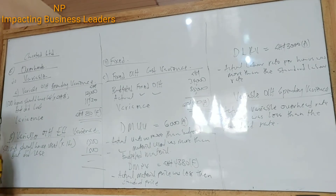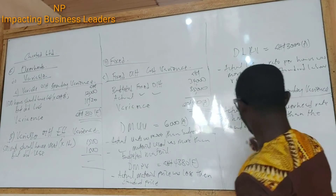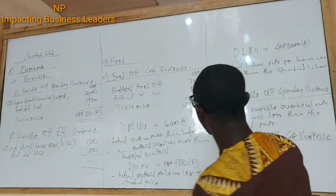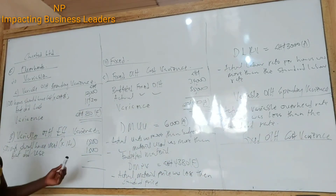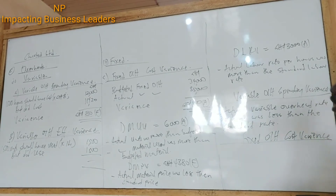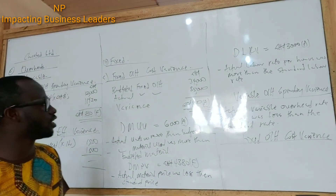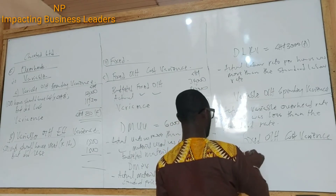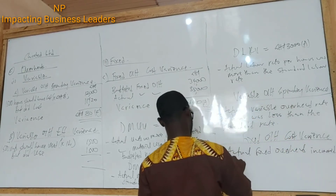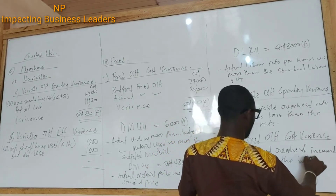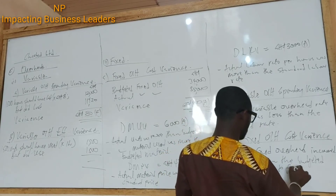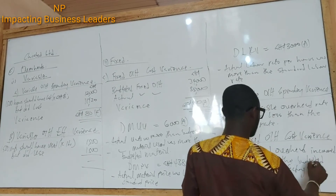Variable overhead efficiency variance — we got nil, so that would not be a problem. The last one is fixed overhead cost variance. That one was adverse. Why would we have adverse for the fixed overheads variance? Since it's about payments, it could mean that the actual fixed overheads incurred was more than the budgeted overheads, due to factory space cost — it could be due to an increase in factory space cost.